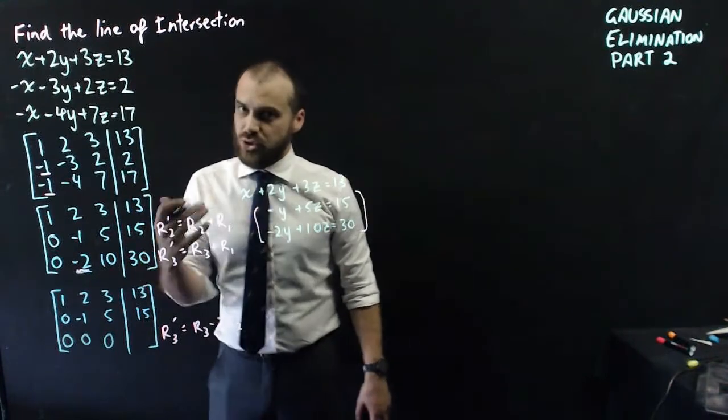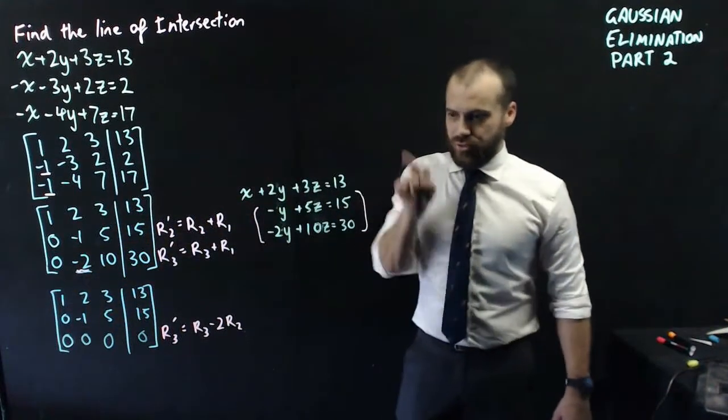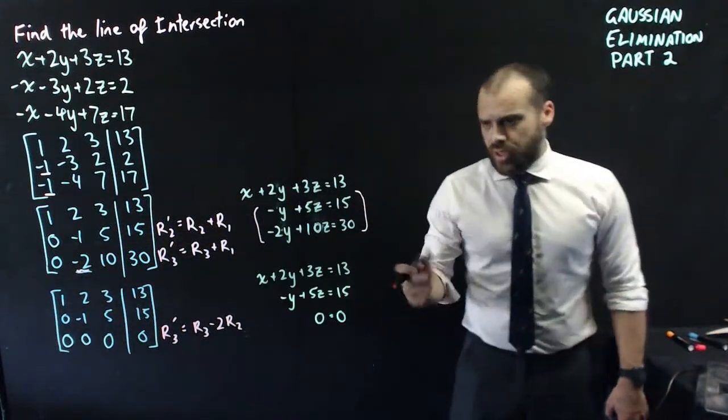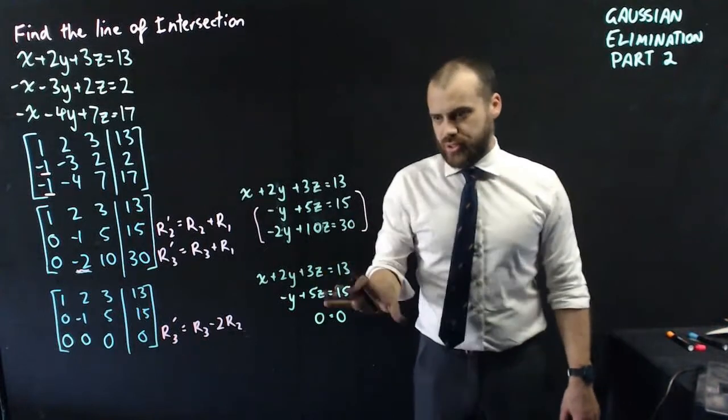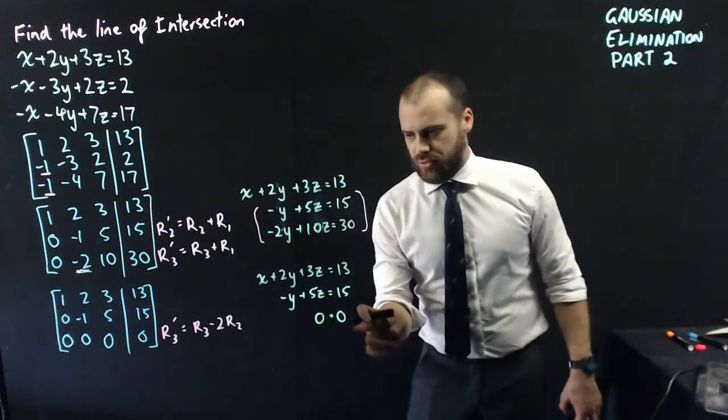That was hard. Okay, that looks like this. Now, how should we interpret this? Well, think about what this means, right? Zero equals zero.